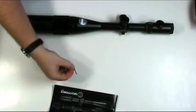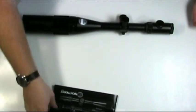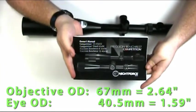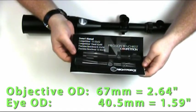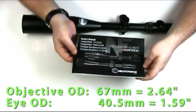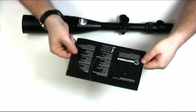It came with an Allen key, I'm guessing that's to adjust the turrets. Instruction manual from Night Force, the owner's manual. Looks like this is specific to their competition and bench rest models, so that's nice.